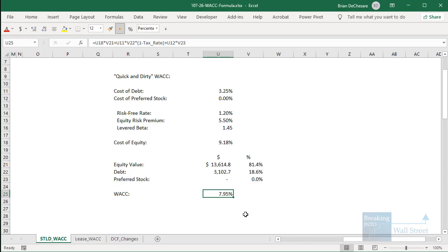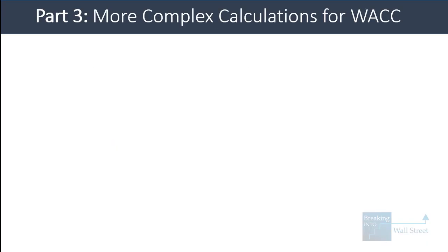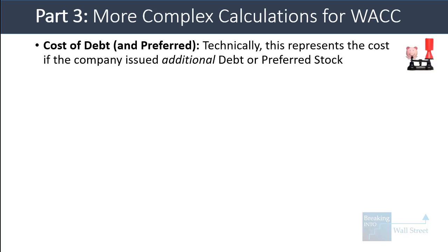Ideally, you want a range of values for WACC, especially in a more complex analysis. That leads us into part three of this lesson, where we'll talk about some more complex calculations for WACC and what you might do a bit differently if you want to be more precise. Let's start with the cost of debt and the cost of preferred stock — these technically represent the cost if the company issued additional debt or preferred stock.